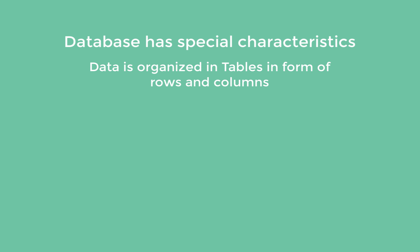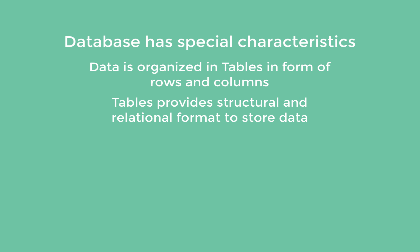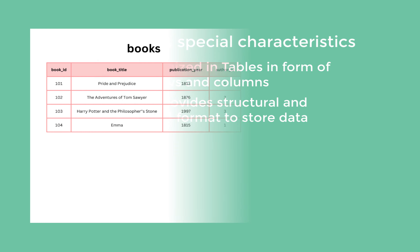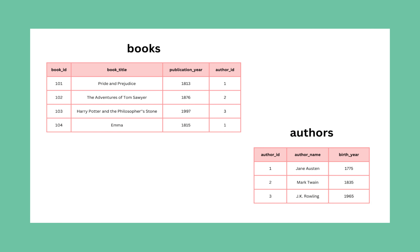The data in a database is usually organized in tables, rows, and columns, which provides a structured and relational format to store information. If you look at my screen, this is how data is stored in tables in the form of rows and columns. Sometimes we also have relationships between tables, which maintain the integrity of data. We create these relationships using something like a foreign key constraint, which we are going to see in the next video.